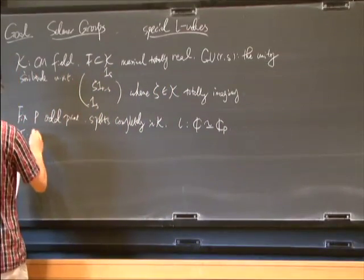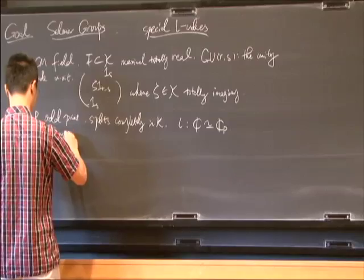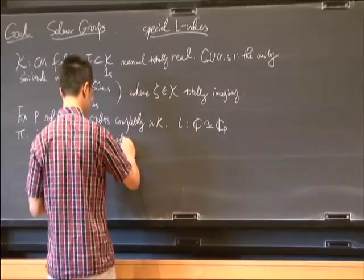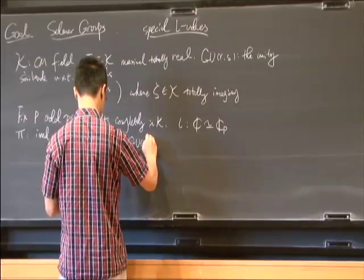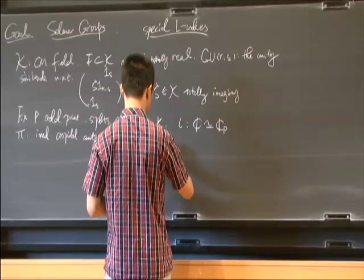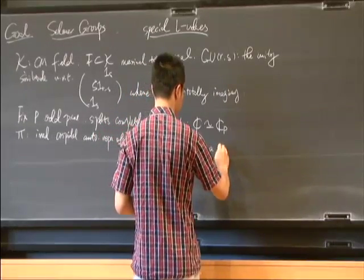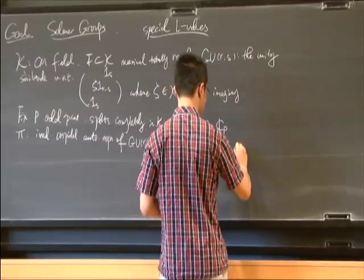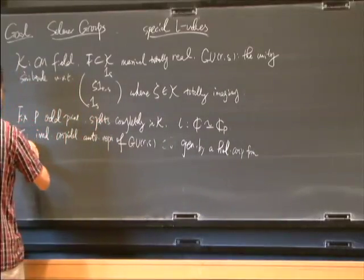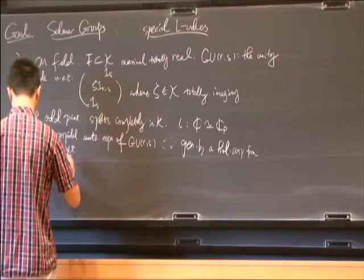Let π be an irreducible cuspidal automorphic representation of GU_RS such that it is generated by a holomorphic cusp form with some regular weight.